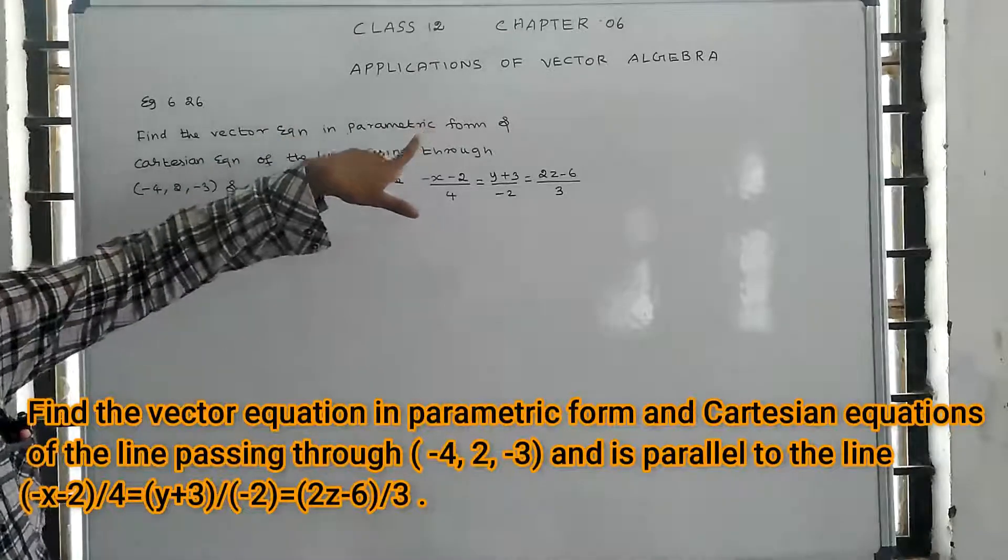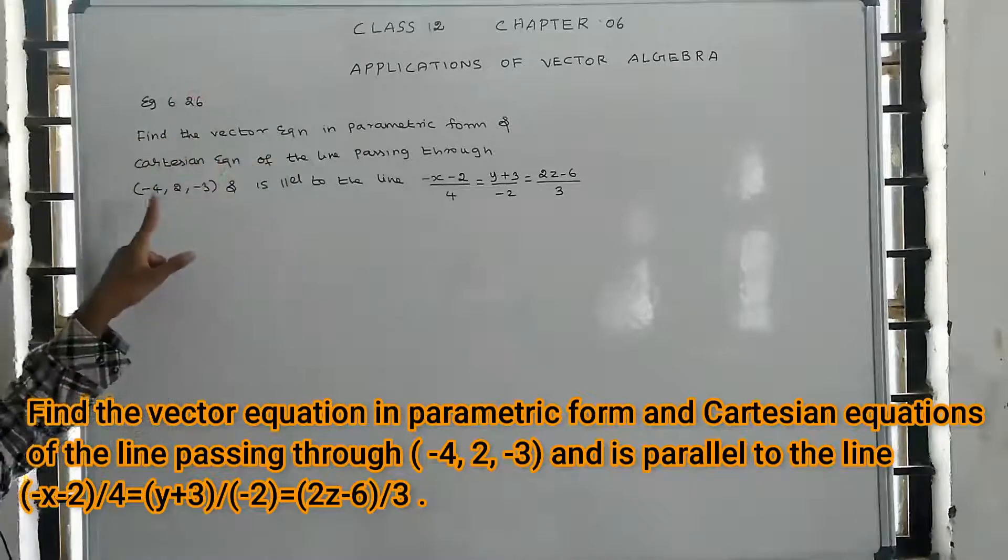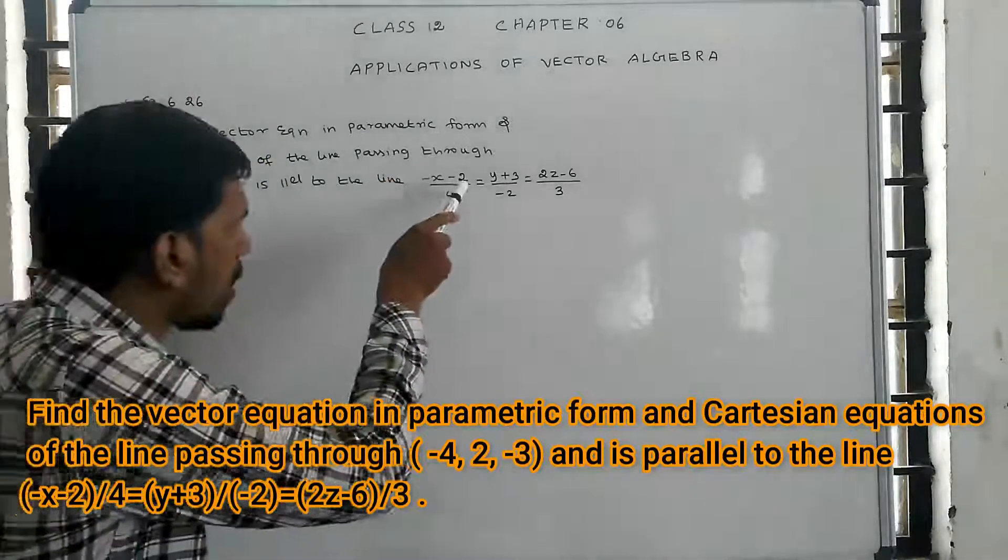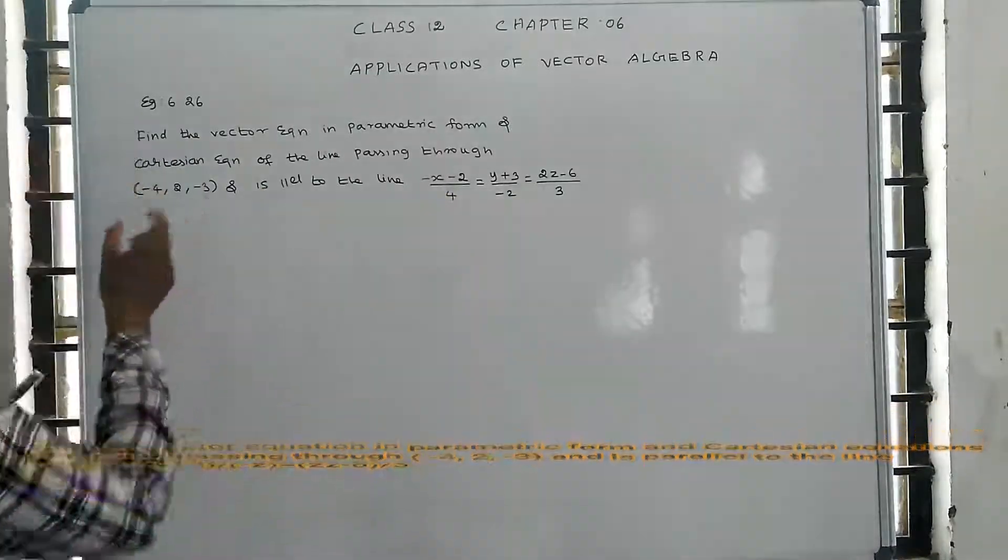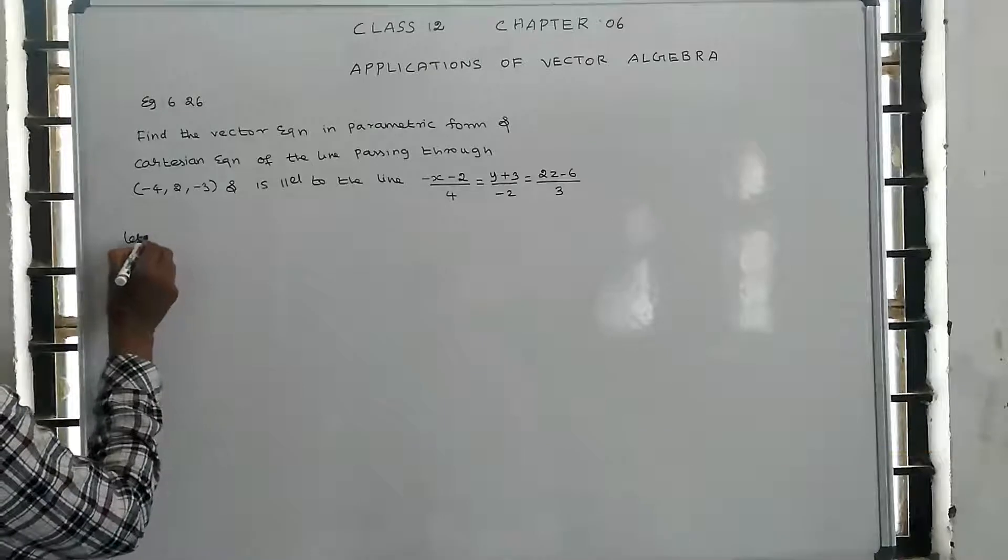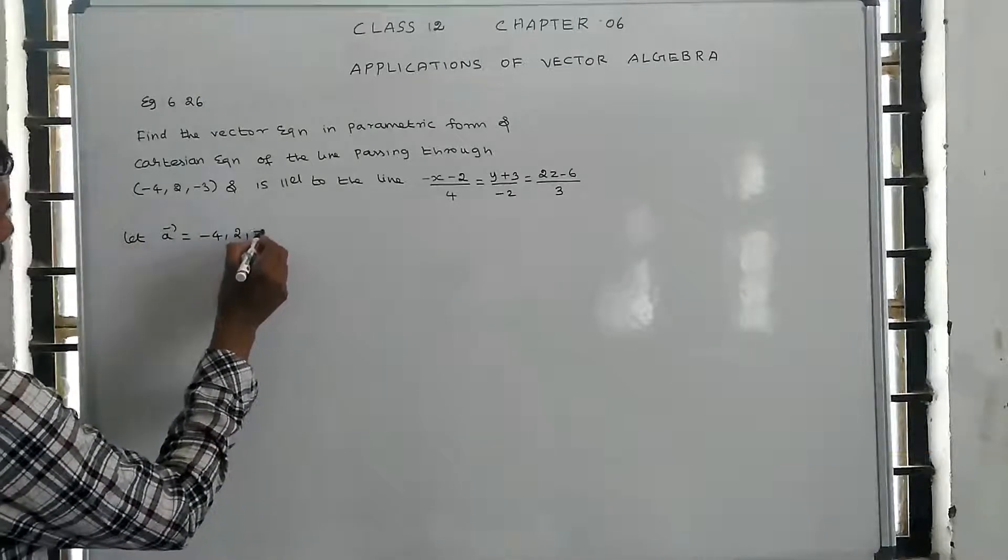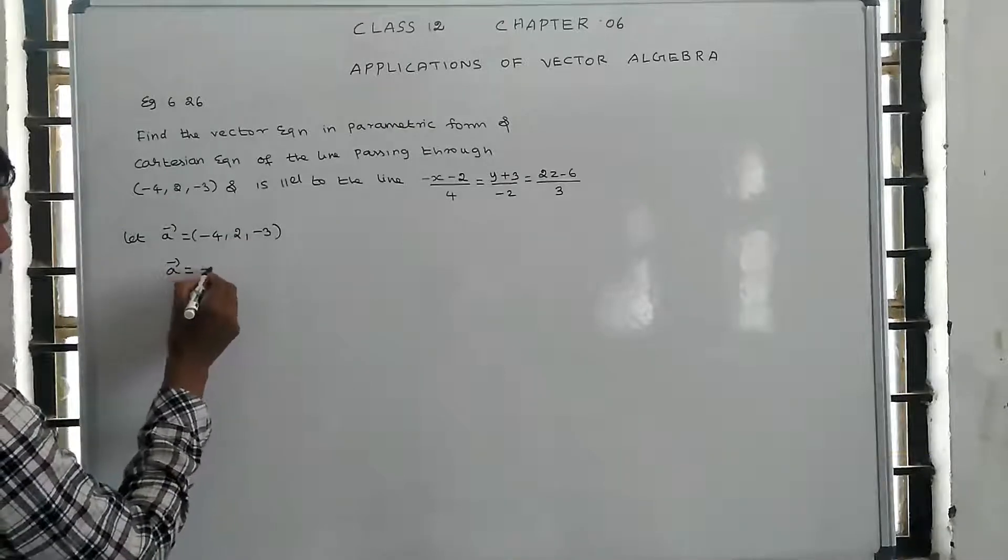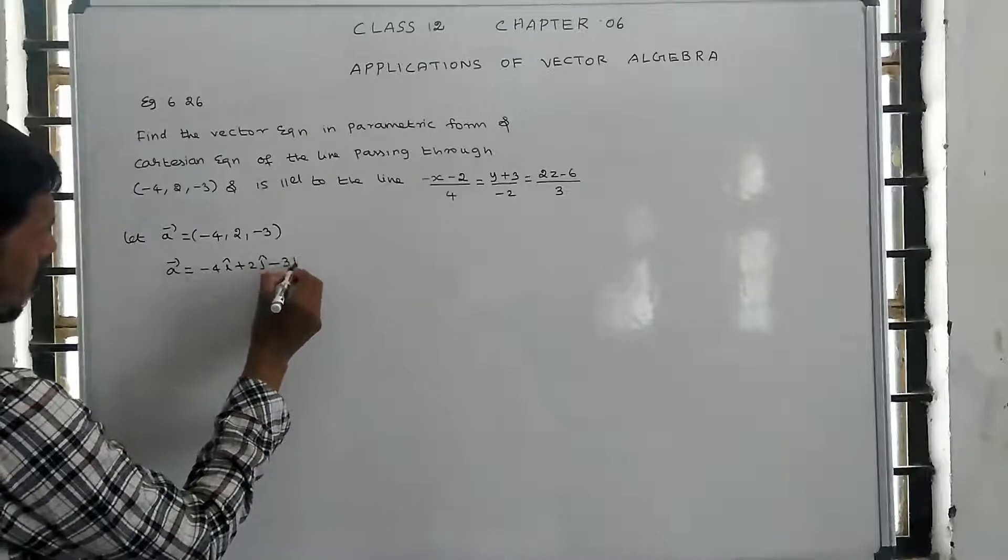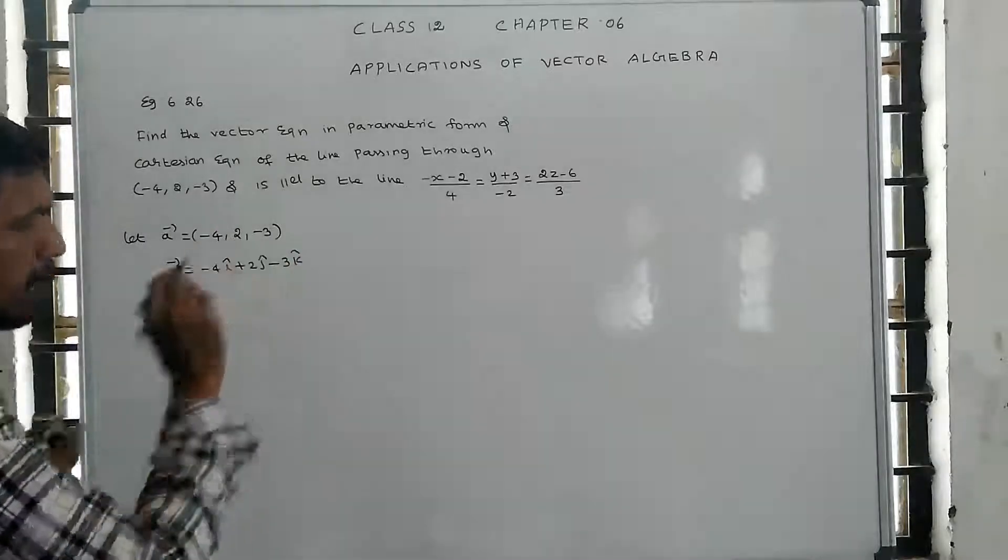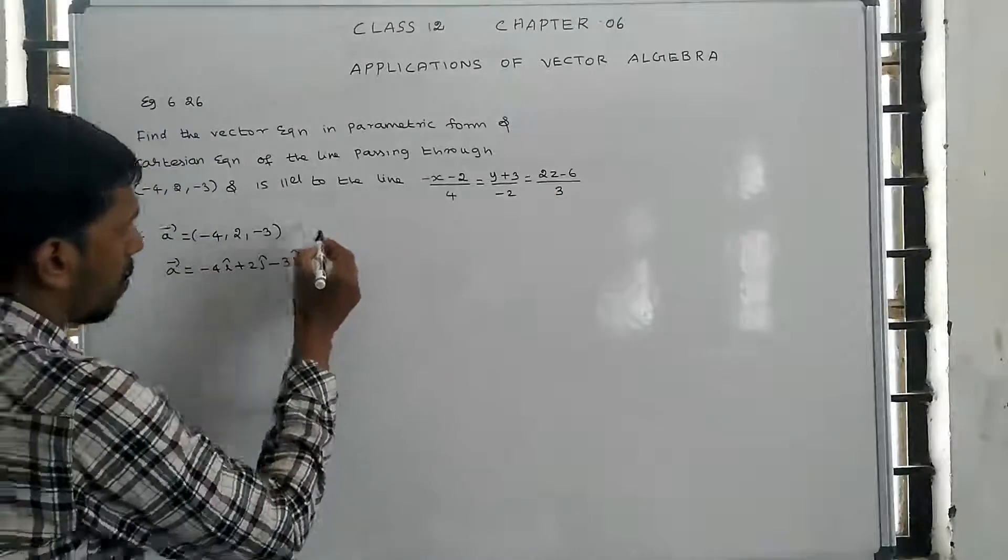The equation is in the form of the parametric form and Cartesian form and the line will pass through the point. The point is A vector equals to minus 4, 2, minus 3 in vector formula. A vector equals minus 4 i cap plus 2 j cap minus 3 k cap.